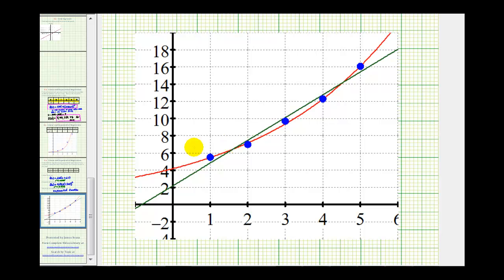The blue points represent the given data. The green graph is the linear function, and the red graph is the exponential function. Notice how the exponential function does bend to fit the data points better than the linear function. This is the reason why the exponential function has an r-squared value that's closer to 1 and is a better model for this data.